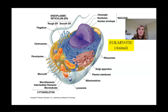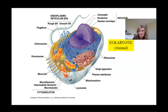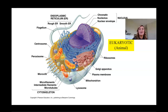A flagellum is found on the outside of the cell attached to the cell membrane — in humans, it's only found on the sperm cell. Centrosomes make up the centriole, which goes to the poles during mitosis and creates spindle fibers to help chromosomes separate into two daughter cells. Peroxisomes are vacuoles containing enzymes that break things down. Microvilli increase surface area to increase the rate of absorption. Not all cells have all of these — for example, not all cells have a flagellum or microvilli.